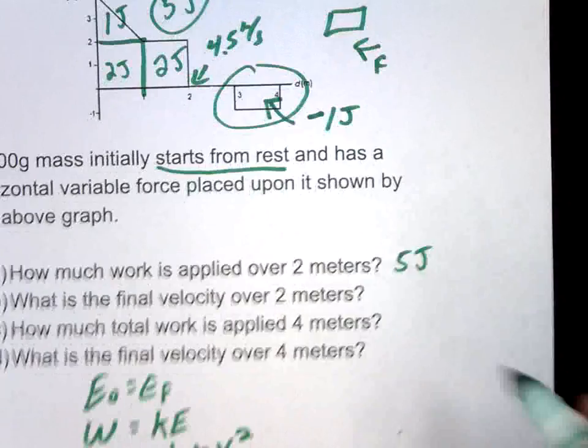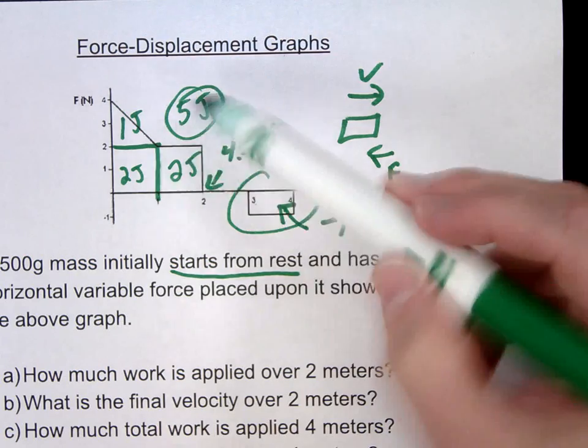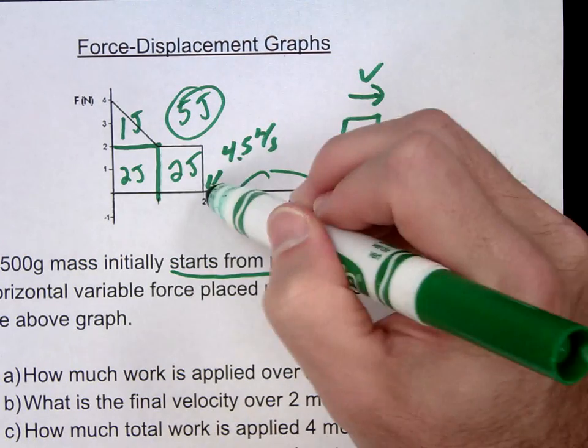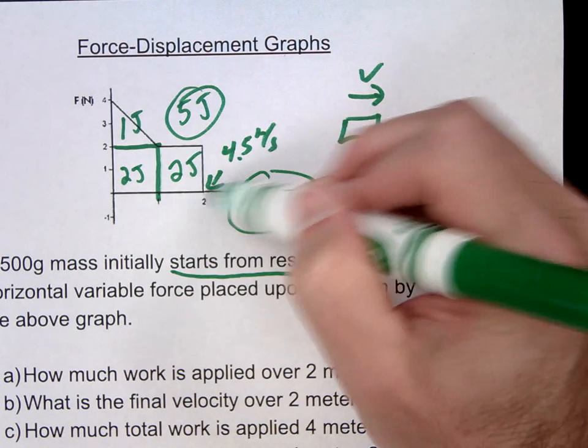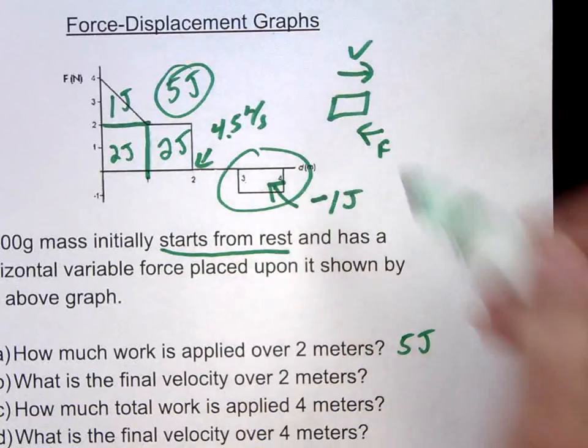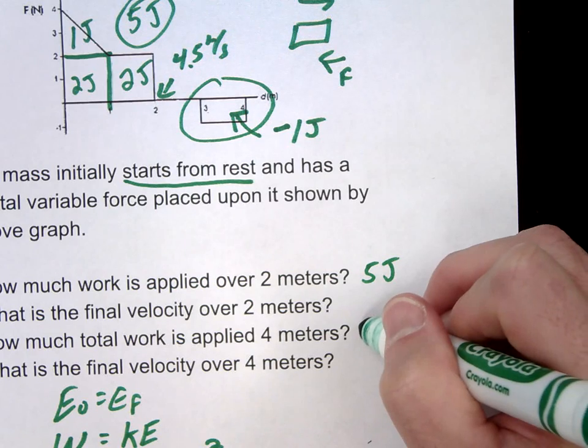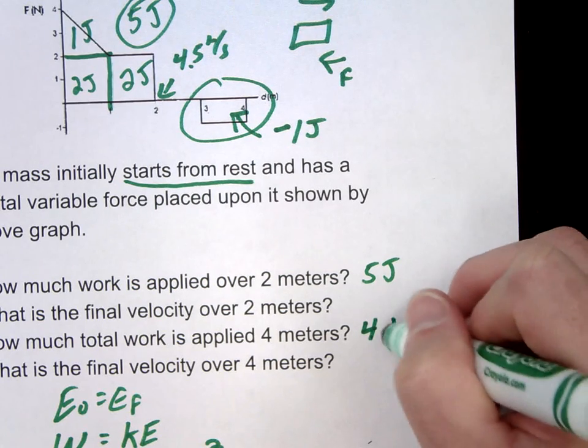Which means, how much total work is applied over 4 meters? Well, we had 5 joules for the first two. I forgot about the 2 to 3. Notice there's no force at all here. So no work clearly in the 2 to 3. Then the 3 to 4 is going to give us negative 1. So the overall should be 5 minus 1, or 4 joules of work.